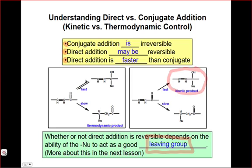However, if addition is reversible, then the direct addition product has the opportunity to equilibrate with the starting material. And eventually, given enough time or enough heat, the starting material will funnel into the more stable thermodynamic product, which is the 1-4, or conjugate addition product.